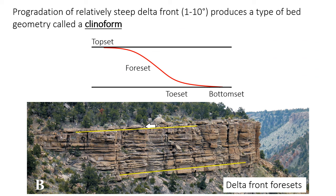Another important difference is that deltas tend to have steeper slopes than a normal shallow marine environment. Deltas have a large-scale bed geometry called a clinoform — a sigmoidal or S-shaped shape with flatter topset beds at the top, a steeper foreset shallowing out to toeset beds, and a fairly flat bottomset that merges with the underlying layers. In reality these clinoforms dip at just a couple of degrees, as shown in the photo where yellow lines trace horizontal beds at the base and top, with very gently dipping foresets in the delta front between them.